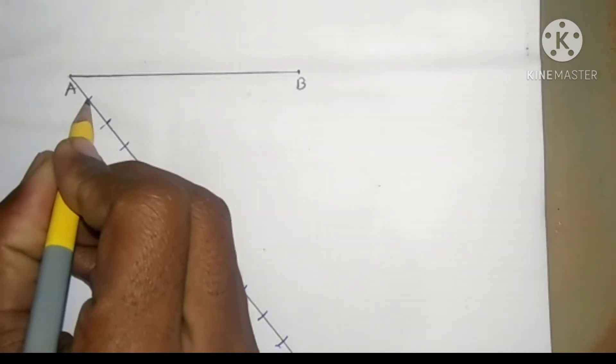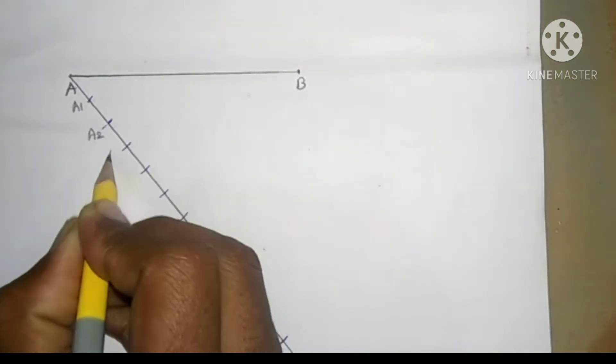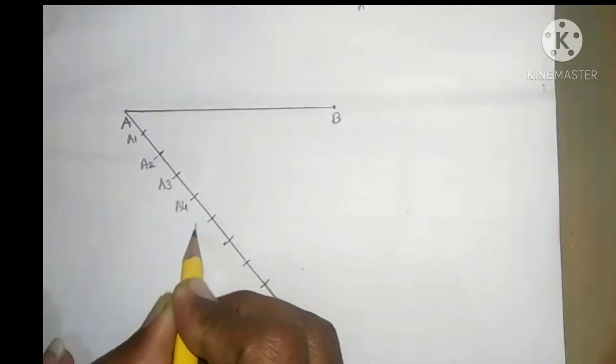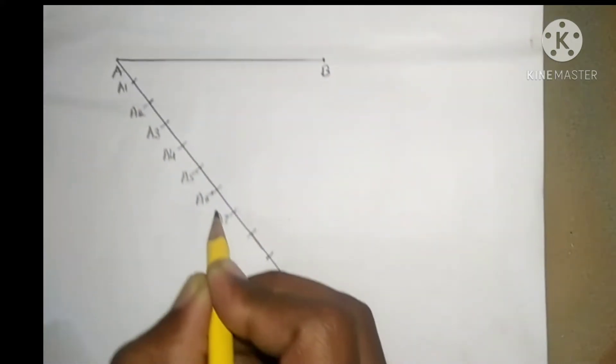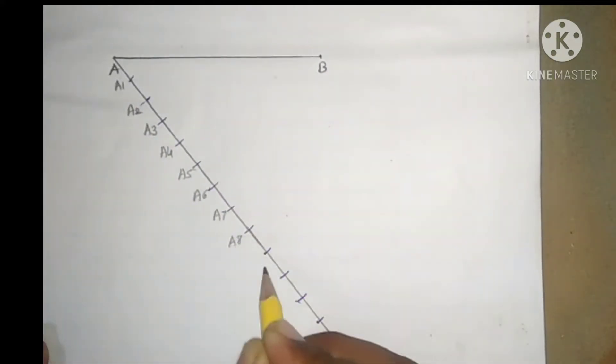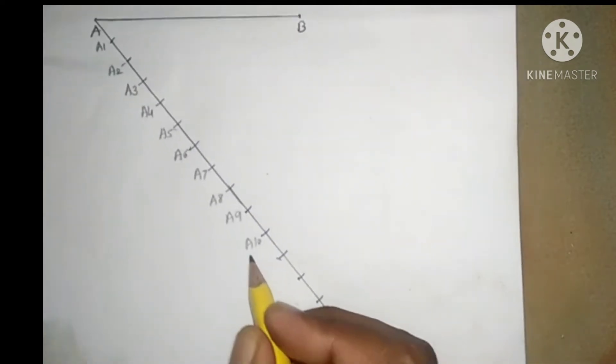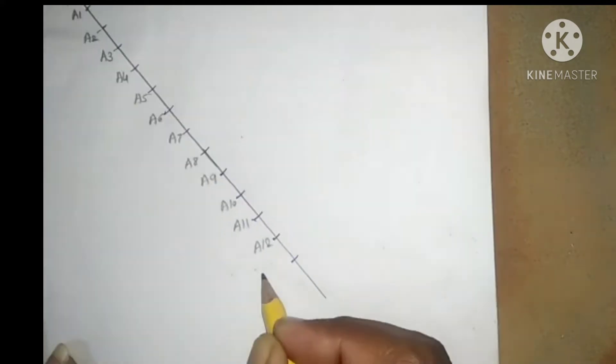Name these points as A1, A2, A3, A4, A5, A6, A7, A8, A9, A10, A11, A12, A13.